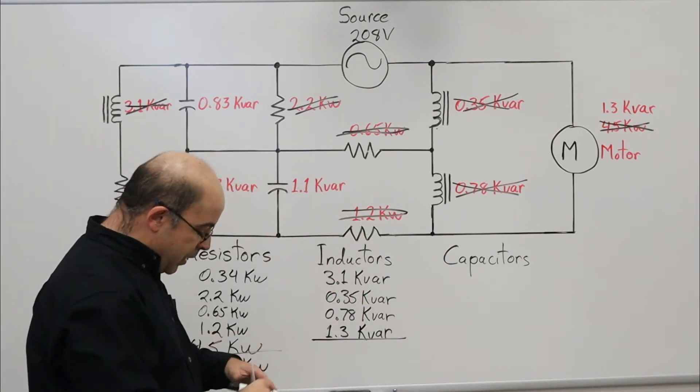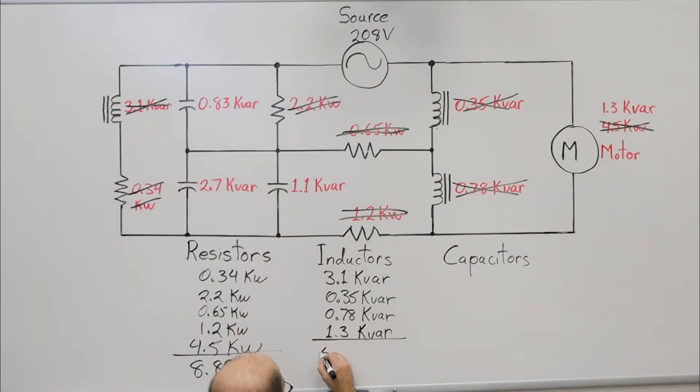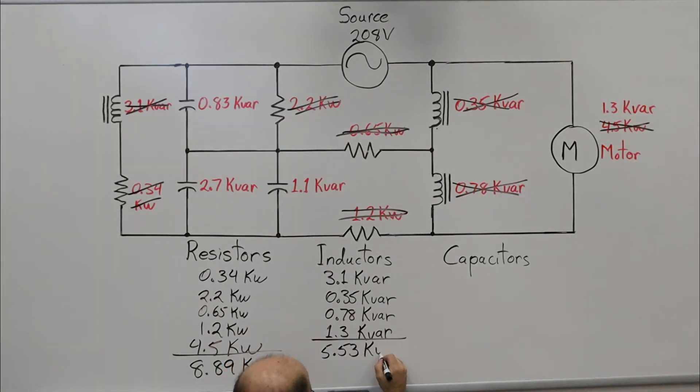Add these all up and you're going to get 5.53 kVAR inductive. Don't forget that L—it's crucial.